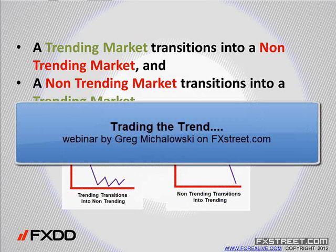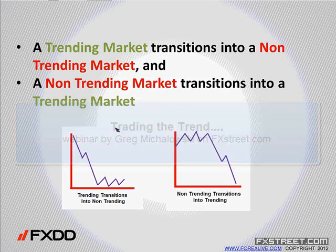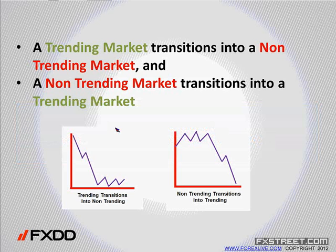What else do we know about trends? A trending market will transition to a non-trending market, and a non-trending market will transition to a trending market. So when we go back to those prior two months before the month of May, what do we have? Non-trending markets — and those non-trending markets transition into a trending market.